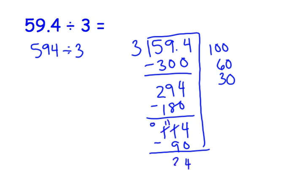And lastly, we have 24 left. We know that 3 times 8 is 24. So that brings us down to 0.